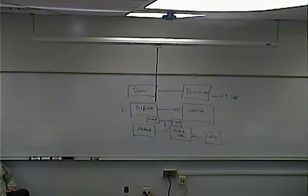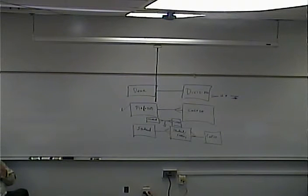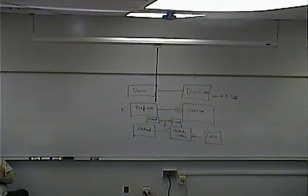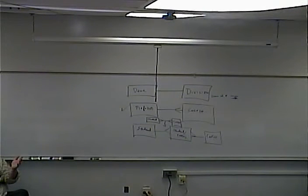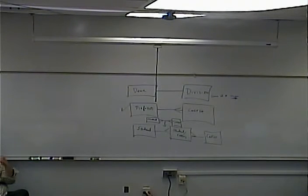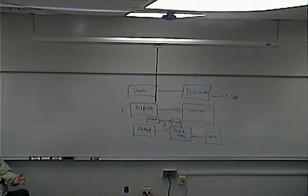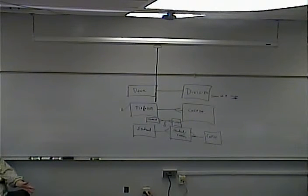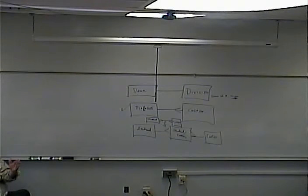In database terms, there really isn't an election — the database administrator or designer decides what gets to be the primary key. A candidate key means two things: every member of that entity has it, and it's unique for every entity. A classic case would be an employee number and a social security number. Both of those are candidate keys — if I were designing a database with employee information, I could make either one the primary key.